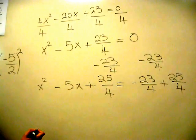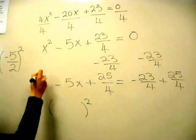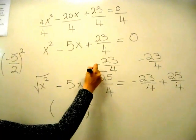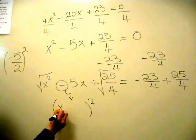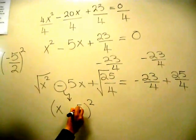Then we're going to work it out. To put it in perfect square form, take the square root of the first, square root of the last, sign of the middle. Square root of x squared is x. Square root of 25 over 4 is 5 over 2.